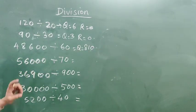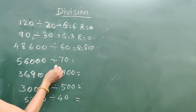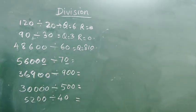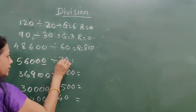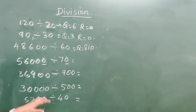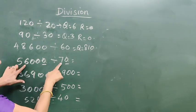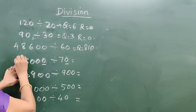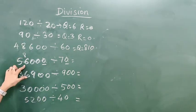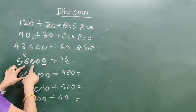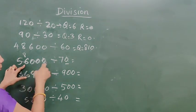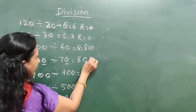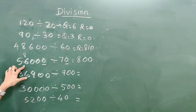Now 56,000 divided by 70. This one 0 from 70 and one 0 from 56,000 — you remove them, cancel them out. Now 5,600 divided by 7. From the 7 times table, 7 eights are 56, and the remaining 2 zeros come down, so the answer is 800.